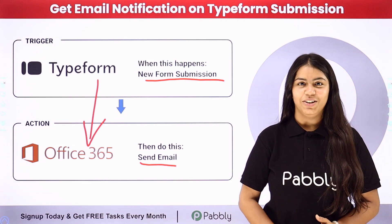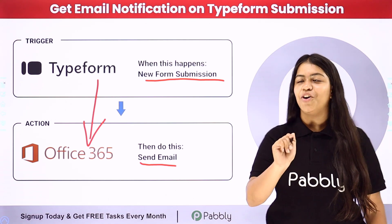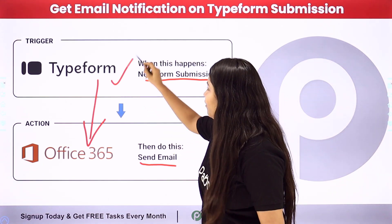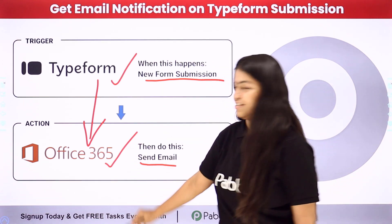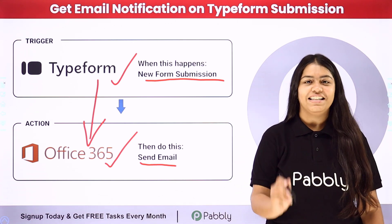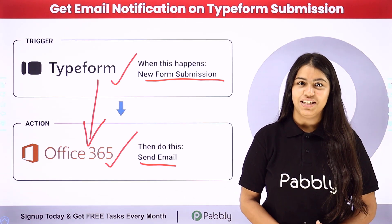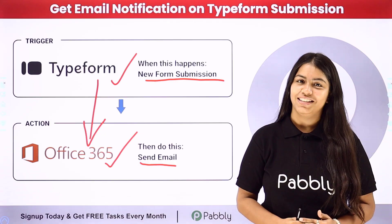In Pabli, we have the concept of Trigger and Action. For the Trigger, we are going to use Typeform, and for the Action, we are using Microsoft 365, that is Outlook email. If you want to learn this process step by step, follow me through the screen.